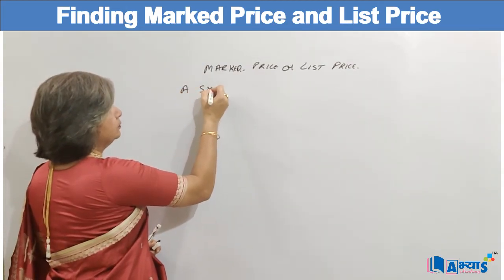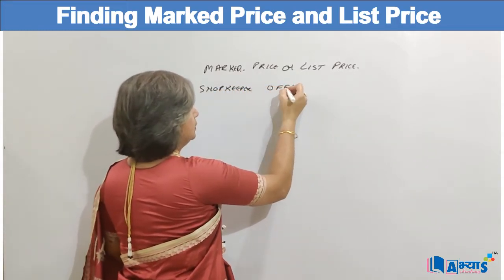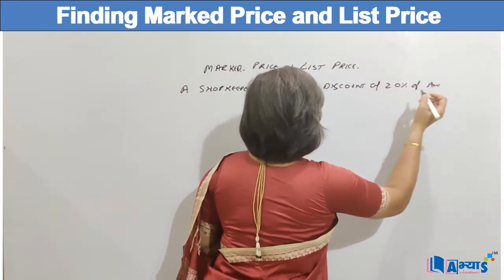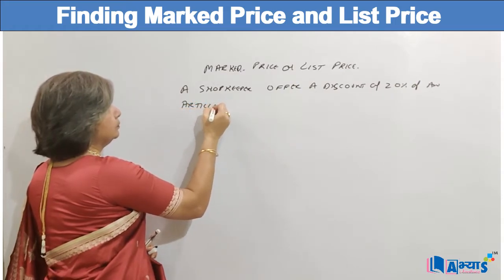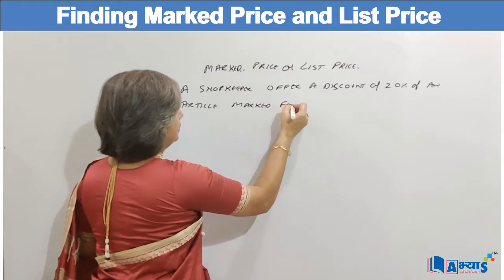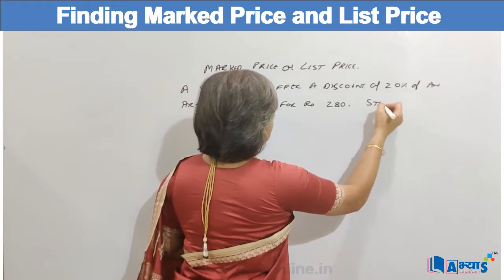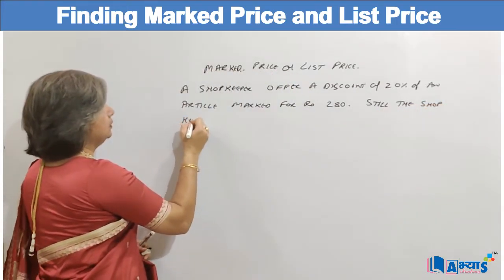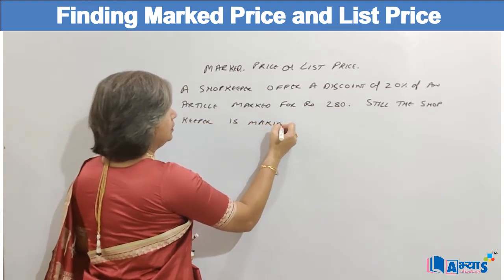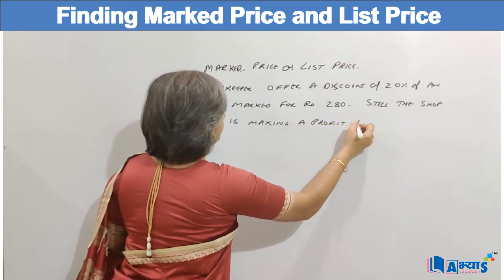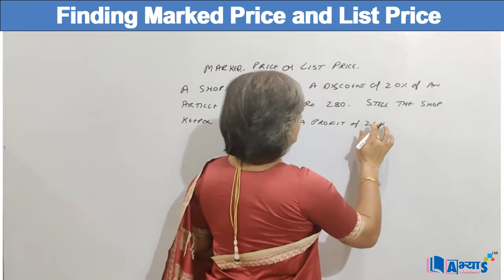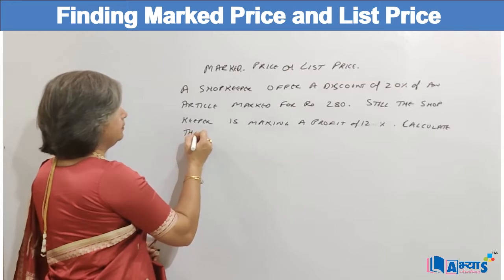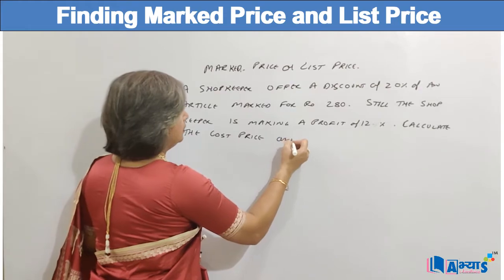Suppose a shopkeeper offers a discount of 20% on an article marked for Rs. 280. Still, the shopkeeper is making a profit of 20%. Calculate the cost price and the profit.